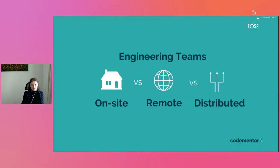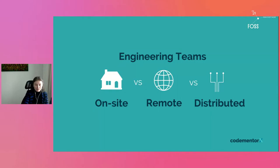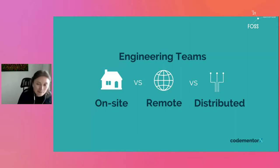Let's start by explaining the three types of engineering teams. The first is the classical on-site, where everyone works from an office. Then remote, where the company starts to hire people working remotely in addition to those in an office — basically a mixture. The fourth type is a team that is fully distributed, people working from home, very similar to what we are experiencing now in pandemic times.